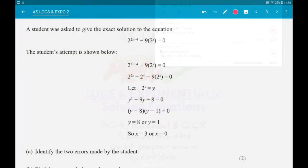Ok then, first up. A student was asked to give the exact solution to the equation 2 to the 2x plus 4 minus 9 times 2 to the x equals 0. We are given a method. Part A wants us to identify 2 errors made by the student.